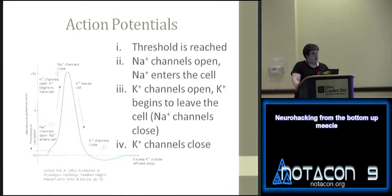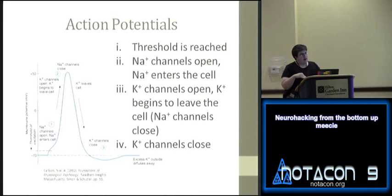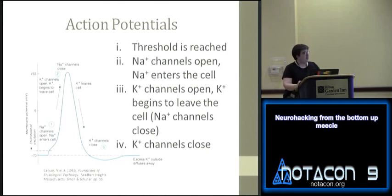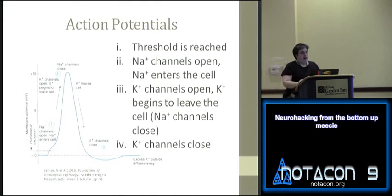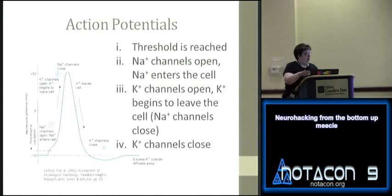This produces the classic neural event: the action potential. A few things to notice — the resting potential hovers around -70 mV. If something changes the surrounding membrane potential past a certain threshold (which differs from neuron to neuron), the action potential cascade is triggered. First, sodium channels open and sodium rushes in; then potassium channels open; as channels close and excess potassium diffuses away and the ion pumps kick in, the potential drops below the resting value — there's a brief refractory period before the nerve can fire again.